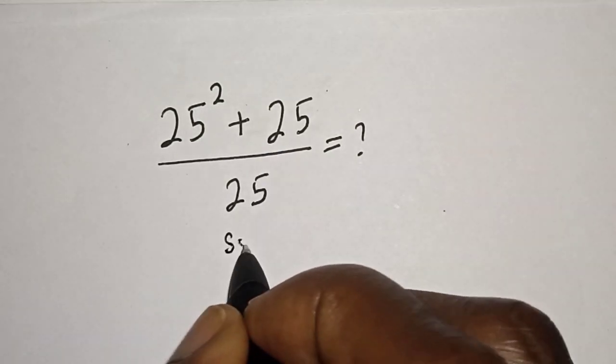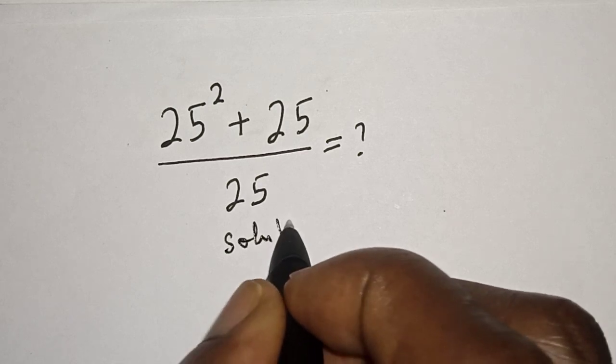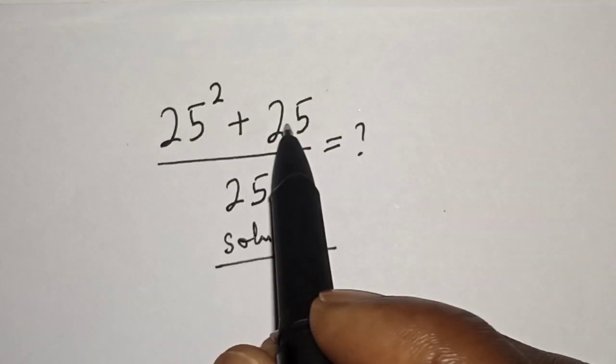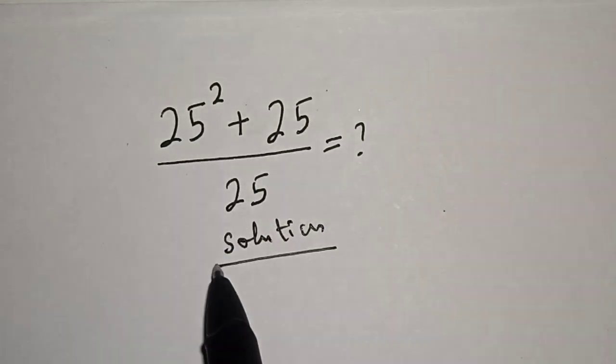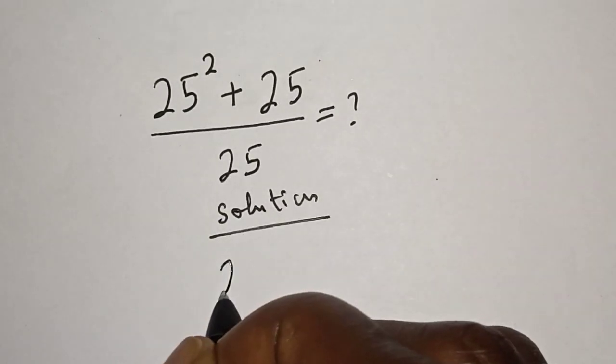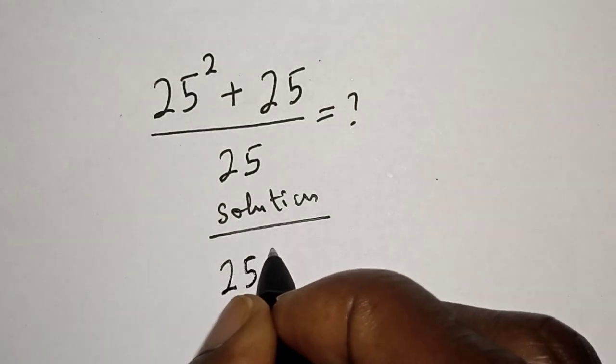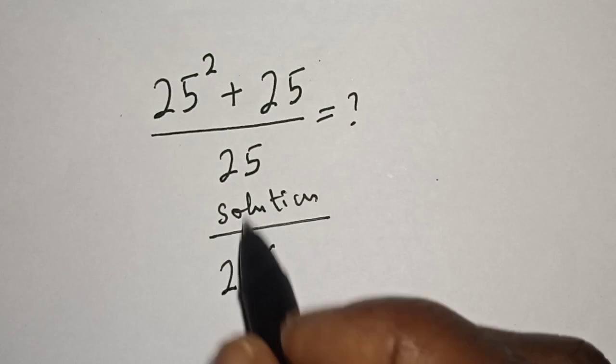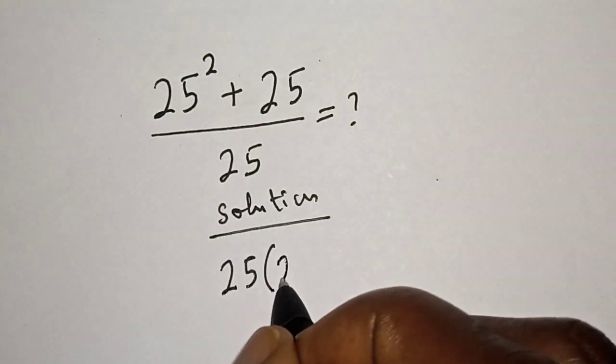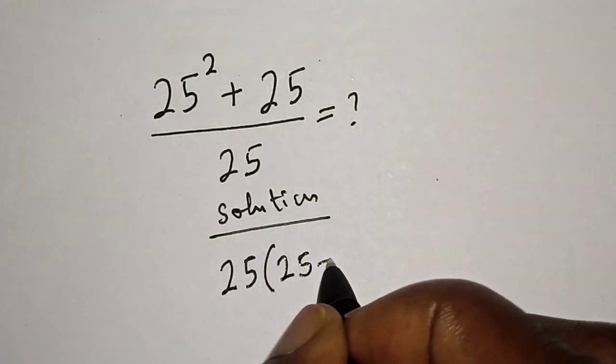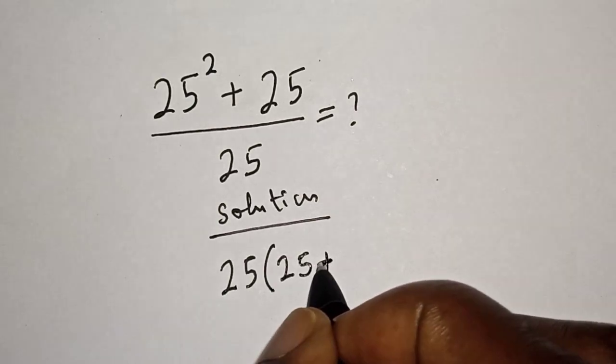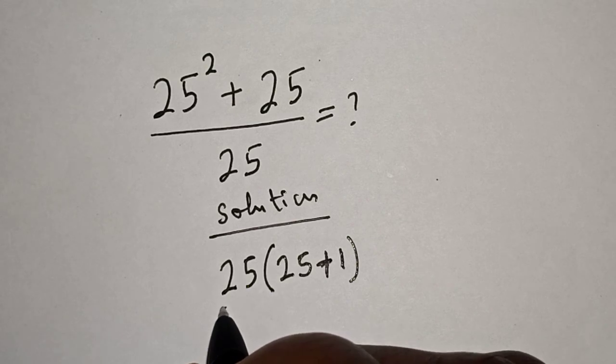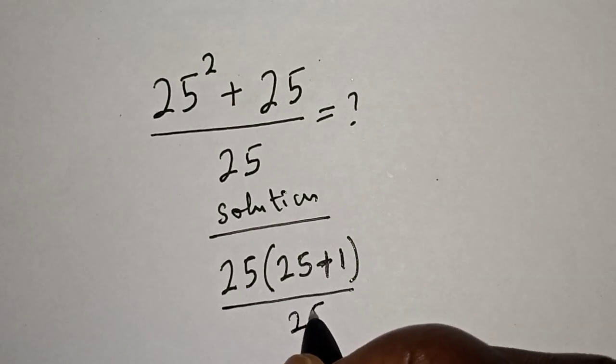Solution: We have 25 squared plus 25 for the numerator, then 25 is common. Let's bring it out: 25 bracket, then in the bracket we have 25, and in this we have one. Then we have 25 plus one over 25.